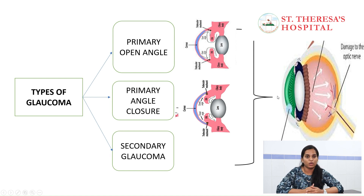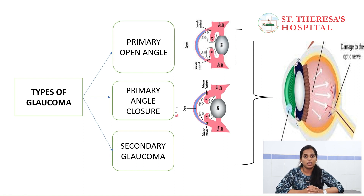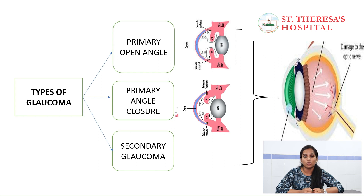There are many types of glaucoma. The most common are open angle, angle closure, secondary glaucoma, congenital glaucoma, and juvenile glaucoma. There are many varieties.